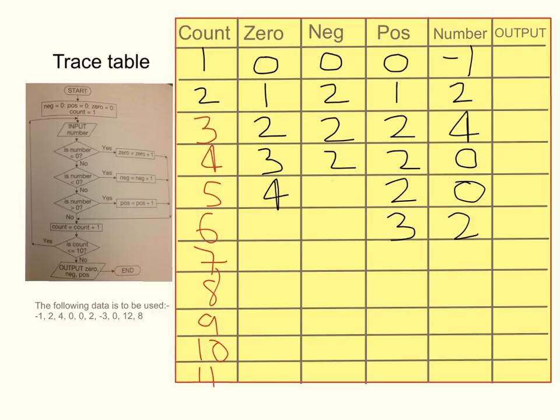And then for count 6, these remain the same. And we get position for positive 4. That was for test data minus 3. And the next one is 5. That is 0. And the next test data is 12. And the last one is 8.